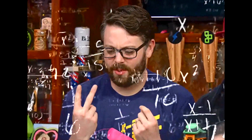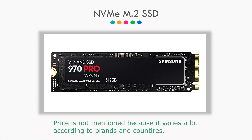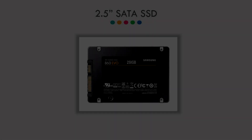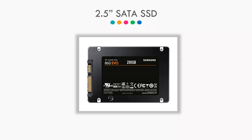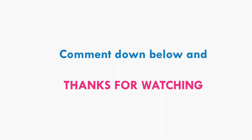So that was all about the 3 different types of SSD. But which one to choose is really the question. If you don't mind spending more and want a really fast SSD, then NVMe M.2 is the way to go. But for most people, SATA M.2 will do fine. And if you just want to upgrade from HDD without spending too much, 2.5 SATA is the way to go. I hope this clears all your doubts about SSD. If you have any questions, comment down below. Thank you for watching and I'll see you in the next one.